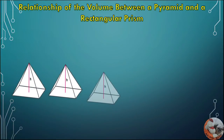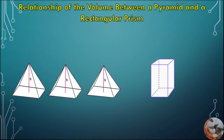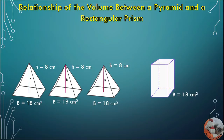Let's say we have three pyramids with rectangular bases and a prism. The base area is 18 square centimeters — the same for both the pyramids and the rectangular prism. The height of the three pyramids is 8 centimeters, and the height of the rectangular prism is also 8 centimeters.